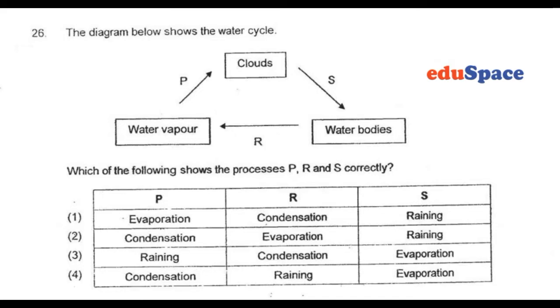Water vapor turns into clouds through condensation, so that will be condensation over here. And water bodies turn into water vapor — that will be evaporation.